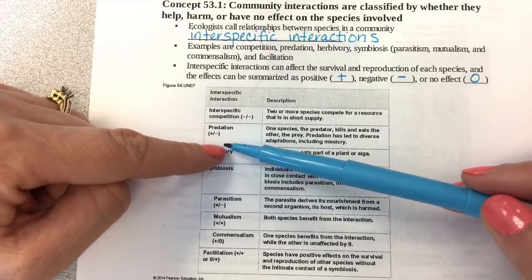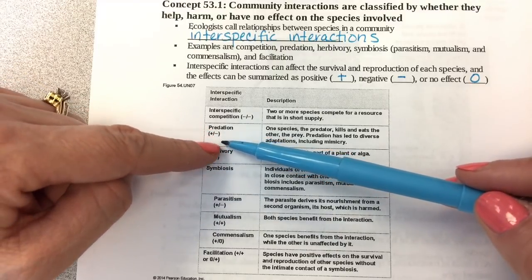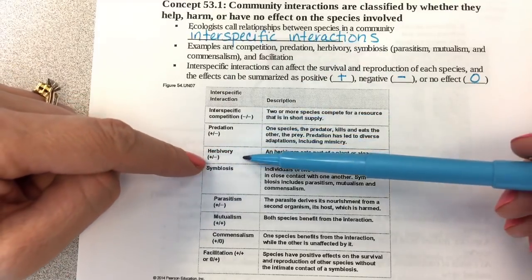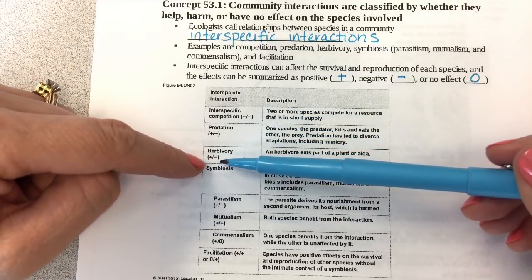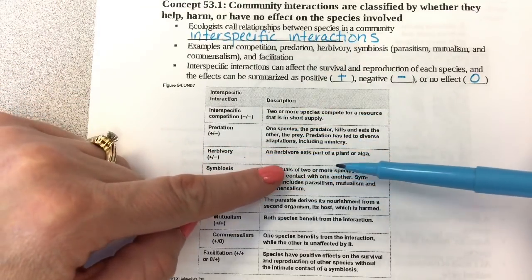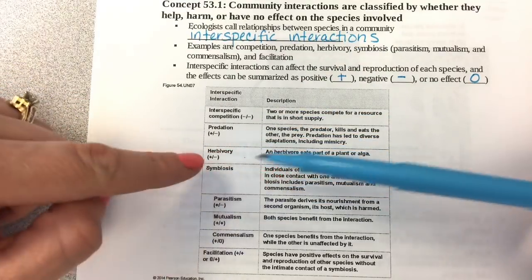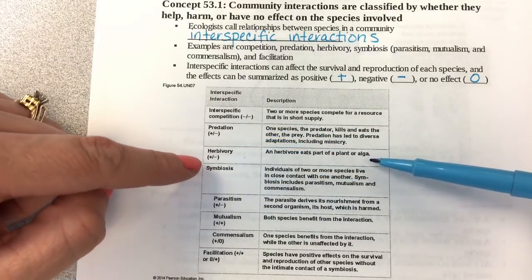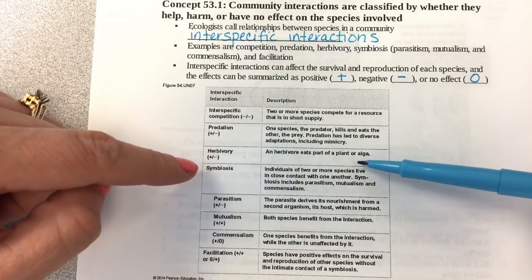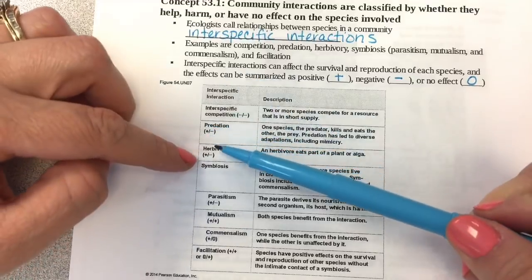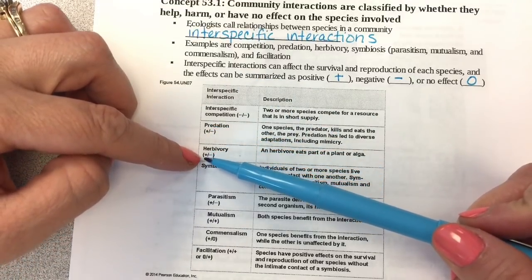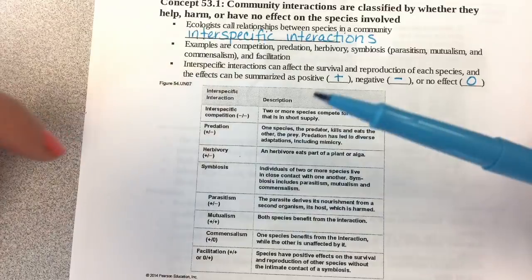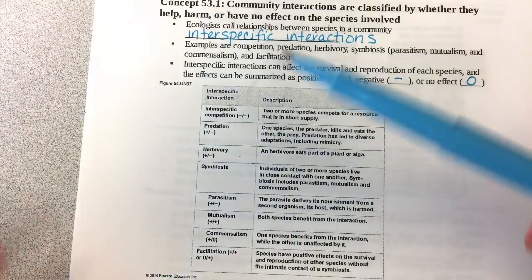Predation is positive-negative: one species benefits and the other is hurt. Herbivory is the same — an herbivore eats part of a plant or alga (alga being singular for algae), so the herbivore eating is positively affected and the plant is negatively affected.